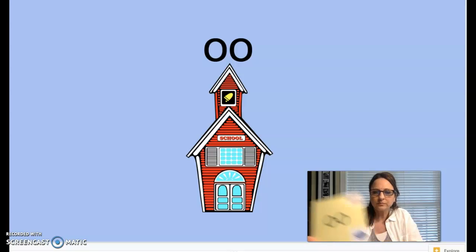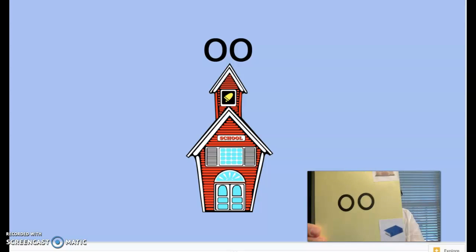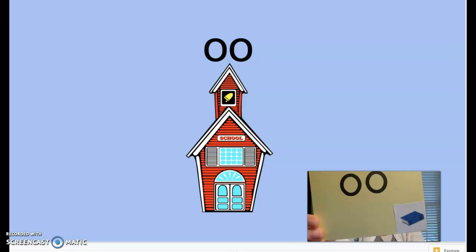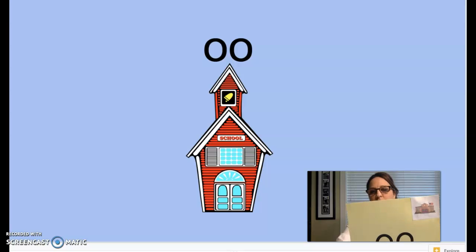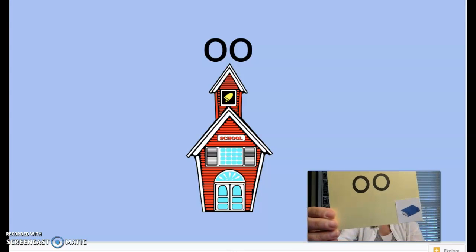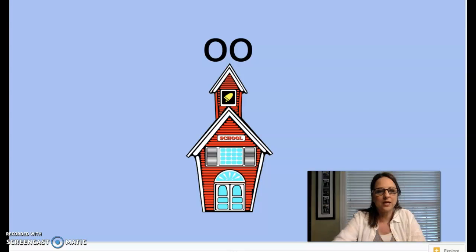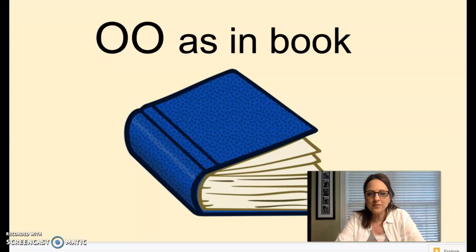And I'm going to show you the card. Here's our O-O card. But the sound card, the picture at the bottom of it is the picture of a book. So we've got a school and a picture of a book. And today, I'm going to talk about the other sound that O-O makes. So another sound that it makes is the sound that is in the word book, uh. Can you say that for me? Say, uh.